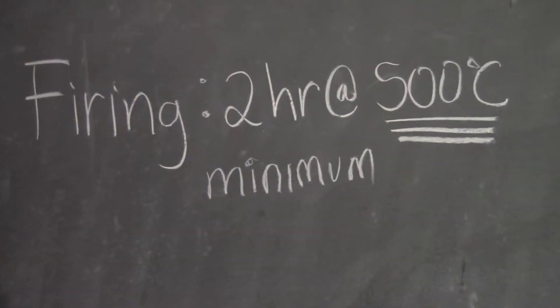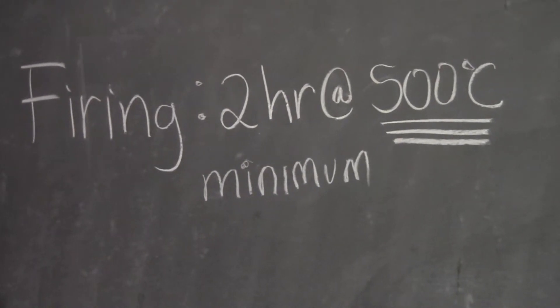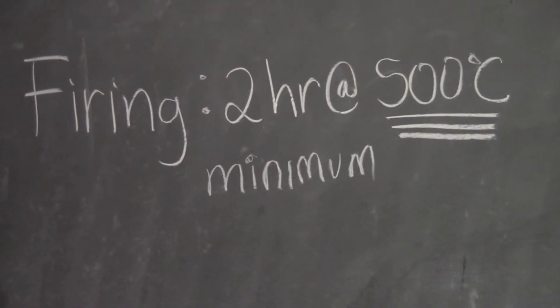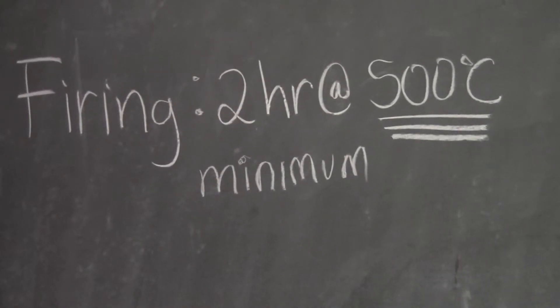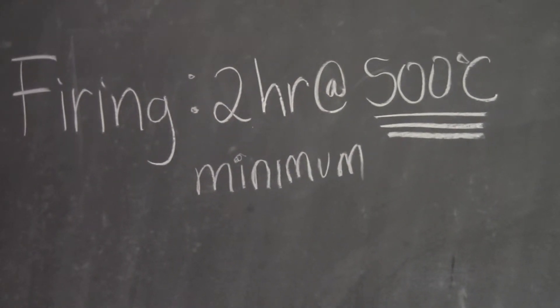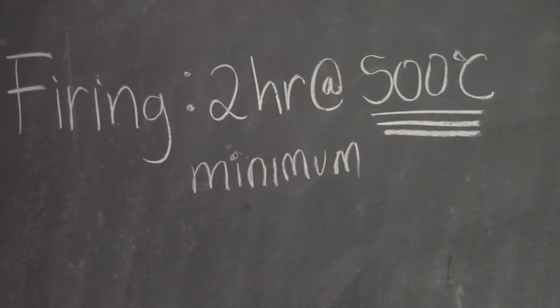It is very important for you to maintain a temperature of 500 degrees Celsius because below this temperature, the nitrates will not turn into oxides and above this temperature, you will ruin the conductivity of your plate.